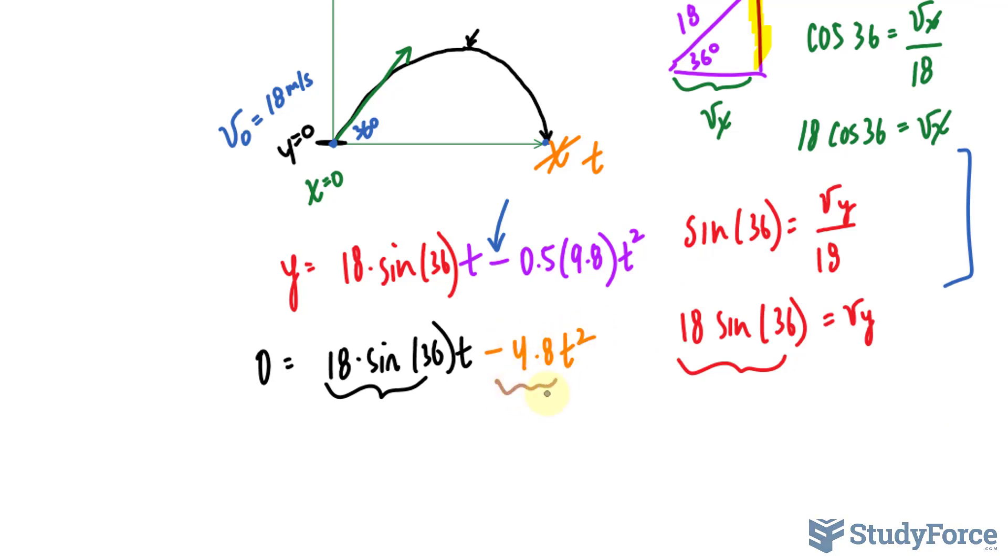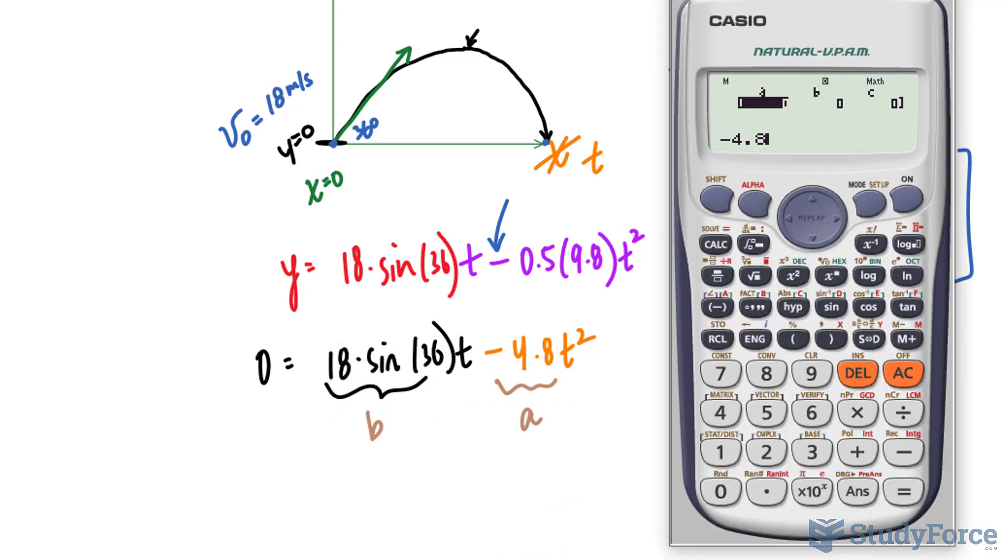So we have -4.8, that's our a value, that's the t² value. That's the b value, and we actually don't have a c value, that's the constant, which doesn't exist here. -4.8, and then I can type in 18 times sin(36) for the b value, and the c value remains the way it is.